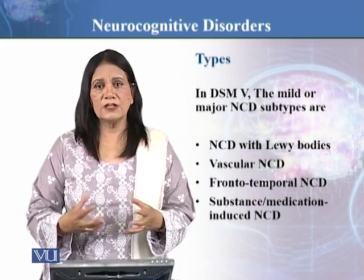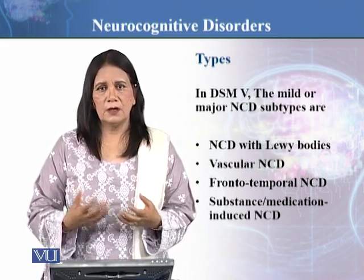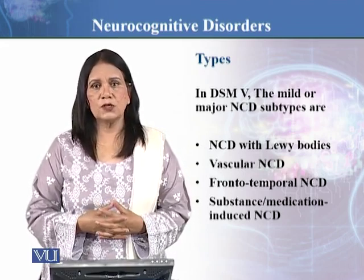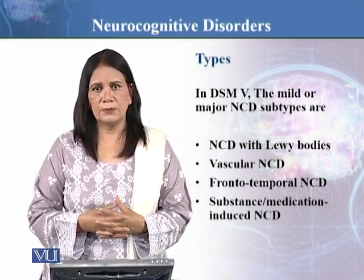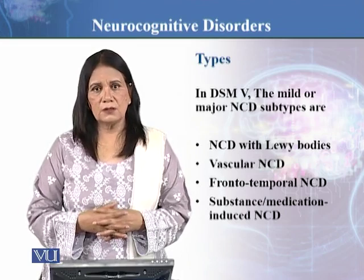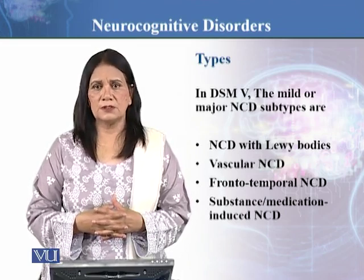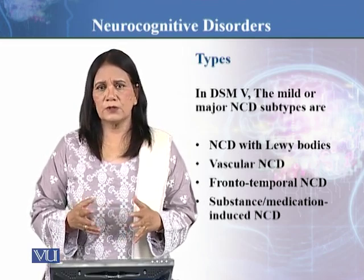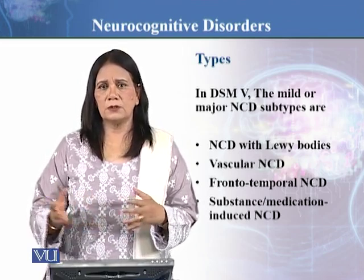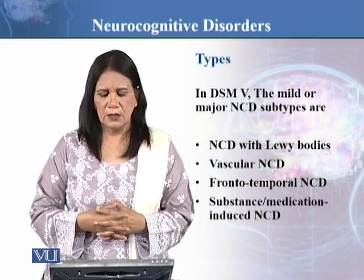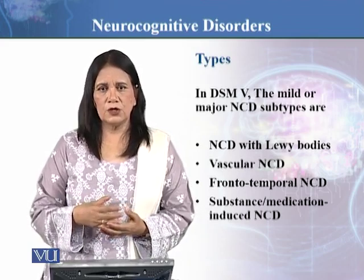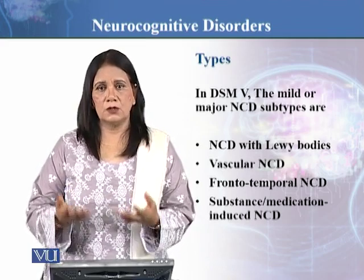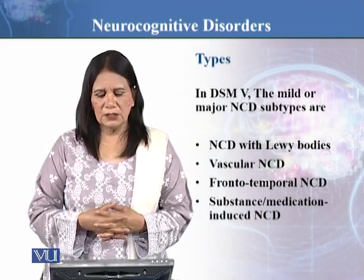Then comes vascular neurocognitive disorder, which is related to your vascular system and blood circulation. Particularly, stroke is one type which comes under vascular neurocognitive disorder. There might be other conditions which also affect. So when the diagnosis or type categorization of these disorders comes, we are looking at the types of conditions resulting in neurocognitive disorder.